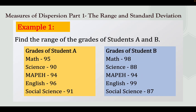Let us have an example. Let us find the range of the grades of Student A and Student B. In the grades of Student A, the highest data value is English at 96, and the lowest data value is 90.